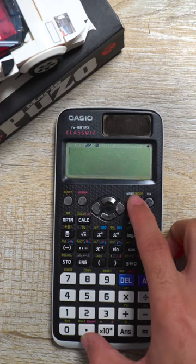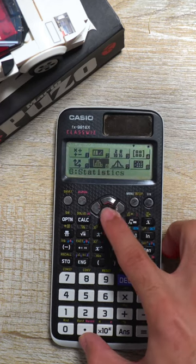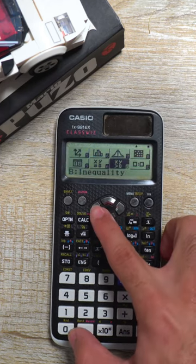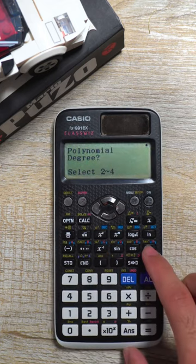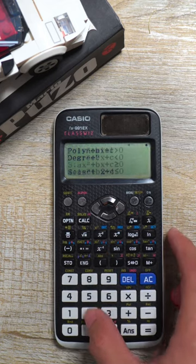What you want to do is press menu and carefully navigate to where you see inequality. Press B to enter this mode, then select the degree. Since it's quadratic, that means it's number two.